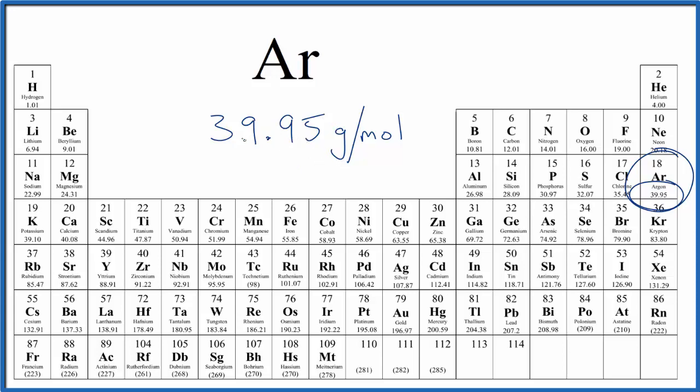What this number means is that if you have 39.95 grams of argon, that's going to be one mole. If you're given one mole, it's going to have a mass of 39.95 grams. So that's what the molar mass tells us.